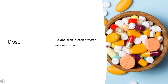Dose for eye itching caused by allergic conjunctivitis — ophthalmic dosage form eye drops: olopatadine 0.1% solution, adults and children 3 years of age and older, put one drop in each affected eye two times a day at least 6 to 8 hours apart. Children younger than 3 years of age: use and dose must be determined by your doctor. Olopatadine 0.2% solution, adults and children 2 years of age and older: put one drop in each affected eye once a day. Children younger than 2 years of age: use and dose must be determined by your doctor.